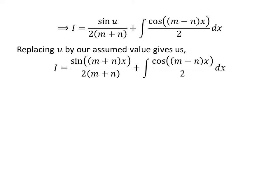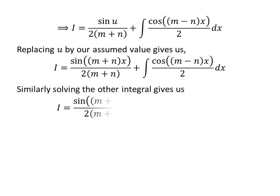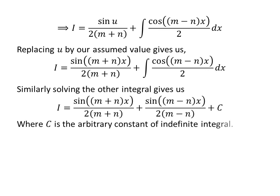Now substituting u back by its assumed value m plus n times x, and similarly solving the integral of cosine of (m−n)x upon 2 with respect to x by the same method, we get I is equal to sine of (m+n)x upon 2(m+n) plus sine of (m−n)x upon 2(m−n) plus capital C.